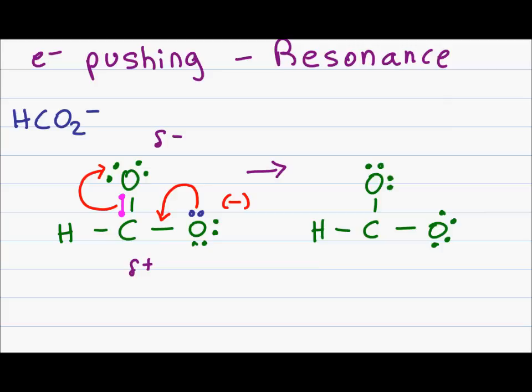Now I have to show what happened as a result of these electron pushing arrows. The blue electrons, instead of showing them as a lone pair, I now show them as a bond between carbon and oxygen. The purple electrons, which connected carbon to oxygen, are now shown as a lone pair on the oxygen atom.